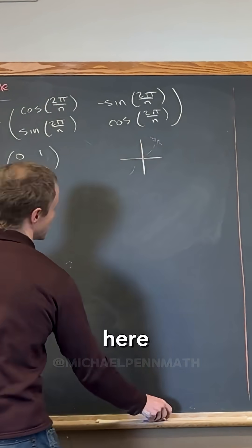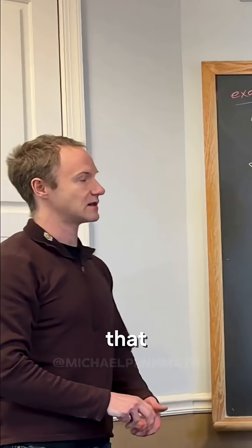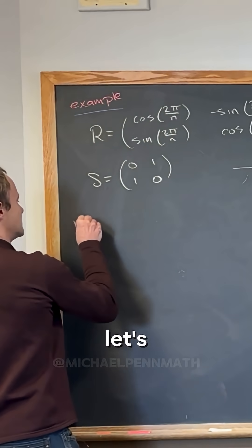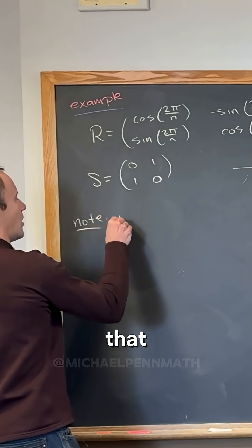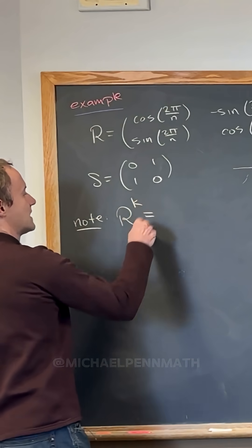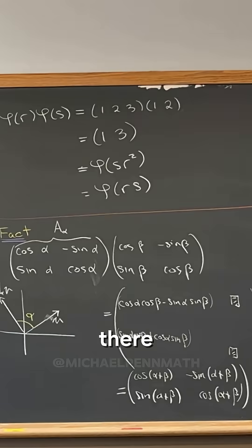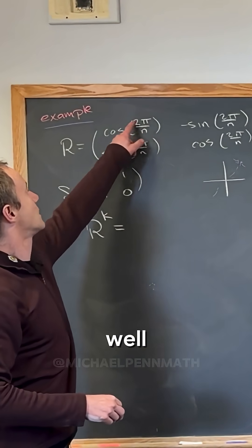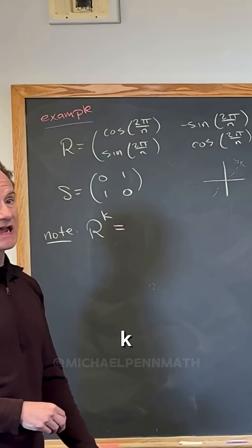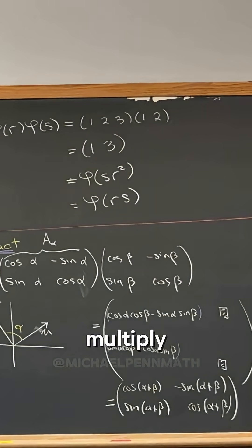So let's notice the following. Let's notice that R to the k, by our rule over there, is just going to be, well, you're just going to add that angle to itself k times, right? Because look, we multiply those matrices and the angle adds. So here we're multiplying R to itself k times, so this angle is going to add to itself k times.